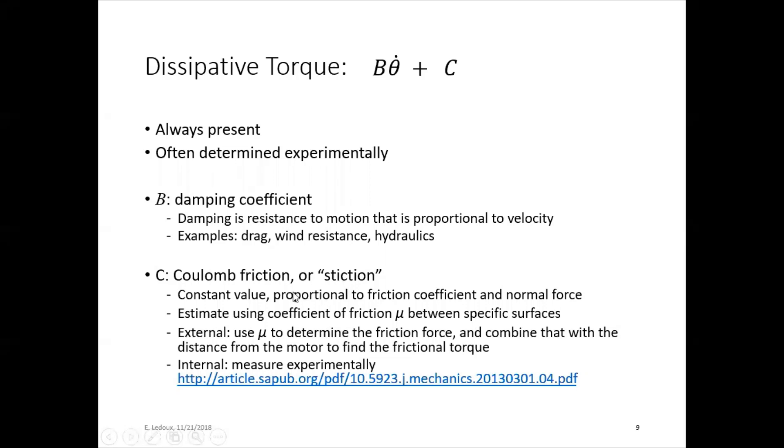Then the Coulomb friction or stiction, this is a constant value. So it's just proportional to the friction coefficient and the normal force. This is the kind of friction that you're used to calculating. So you can estimate it using that friction coefficient μ between the specific surfaces. And if you find the force, combine that with the motor distance to find the frictional torque.